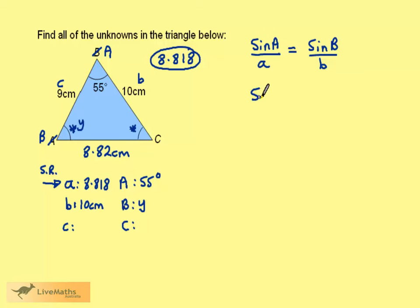Sine A over A is equal to sine B over B. Substituting in, the sine of 55 degrees divided by 8.818 is equal to the sine of the angle I've called Y divided by 10 cm.